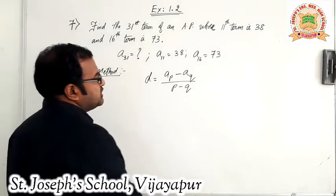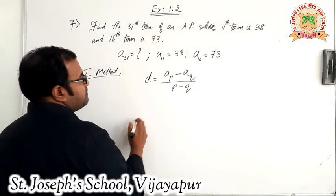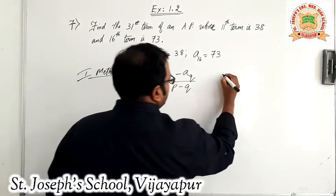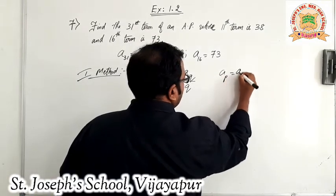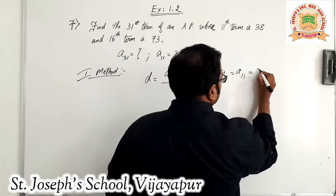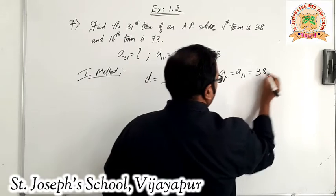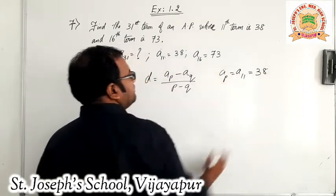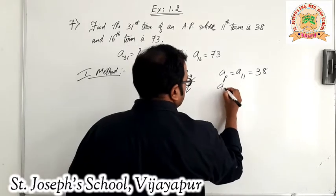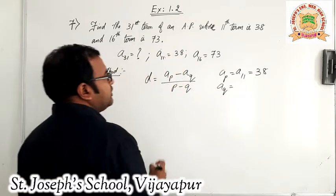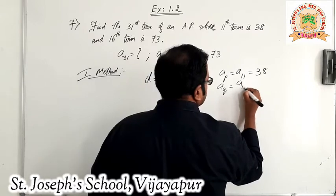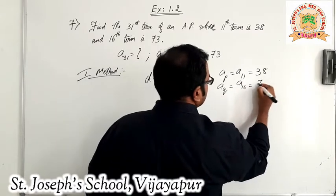So D is equal to AP minus AQ by P minus Q. Here, AP will be A11. What is A11? That is 38. So wherever you find AP, the value will be replaced with 38. Similarly, AQ is A16, which is equal to 73.